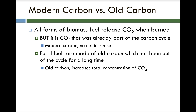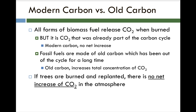When we burn fossil fuels, they represent carbon that was not currently part of the carbon cycle — it's been sequestered, hidden from the carbon cycle for a long time. We're taking carbon from underground that hasn't seen the light of day in thousands or millions of years, burning it and releasing new carbon dioxide — old carbon, but new to the cycle. This increases the total concentration of carbon dioxide on our planet. The bottom line is that if trees or crops are burned and replanted, there's no net increase in atmospheric CO2 concentration.